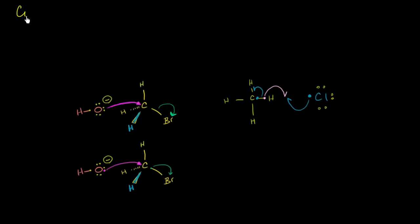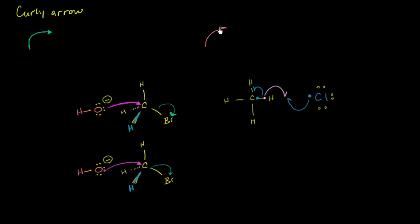In this video, I want to talk about the curly arrow conventions used in organic chemistry and the slight variations I use in many of the videos here on Khan Academy. There are two types of curly arrows you will see: a curly full arrow, and a curly half arrow — also called a fish hook arrow.